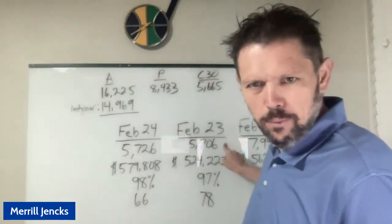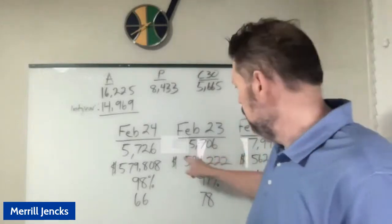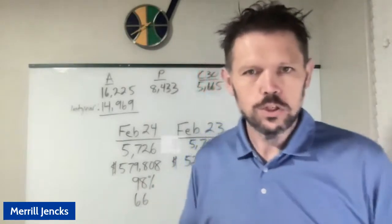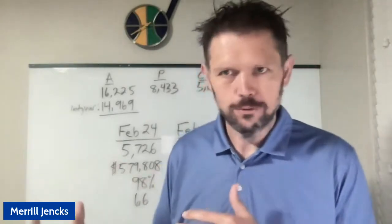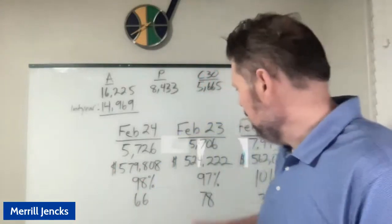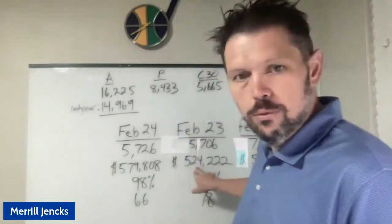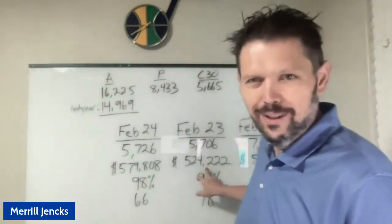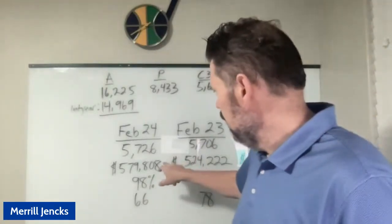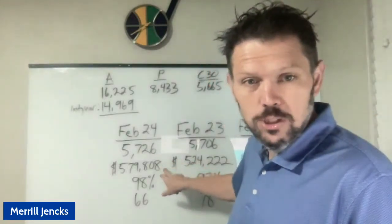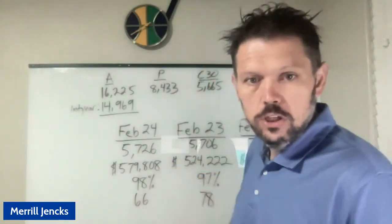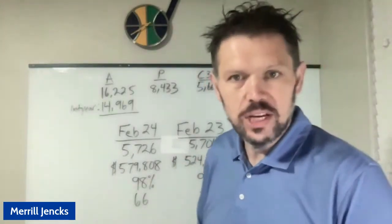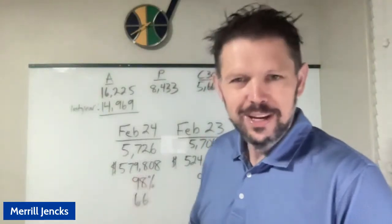I see there's a bit of a glare on my whiteboard there. We got almost an identical number of homes that closed over February of 23 compared to February of 24. Check out the average price, though. In February of 23, the average sales price was $524,000, but then in February of 24, $580,000. That's a 10.6% increase in the average sales price year over year.